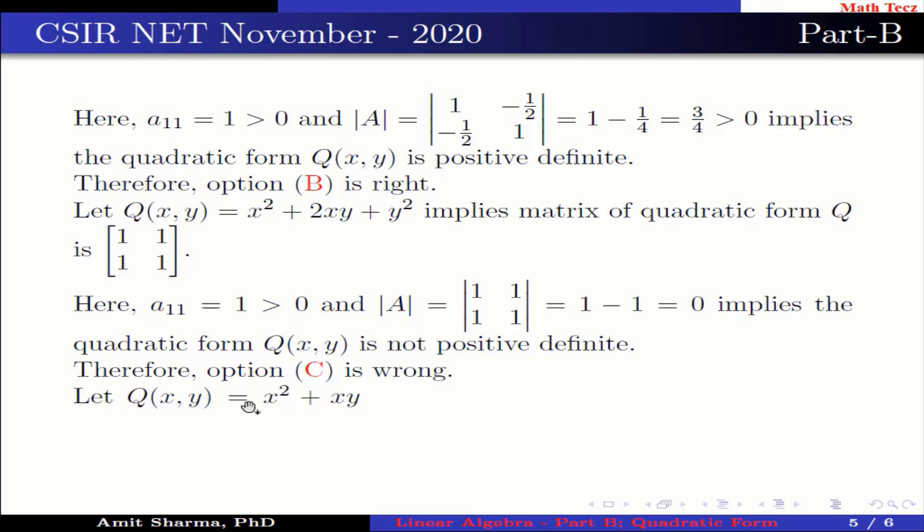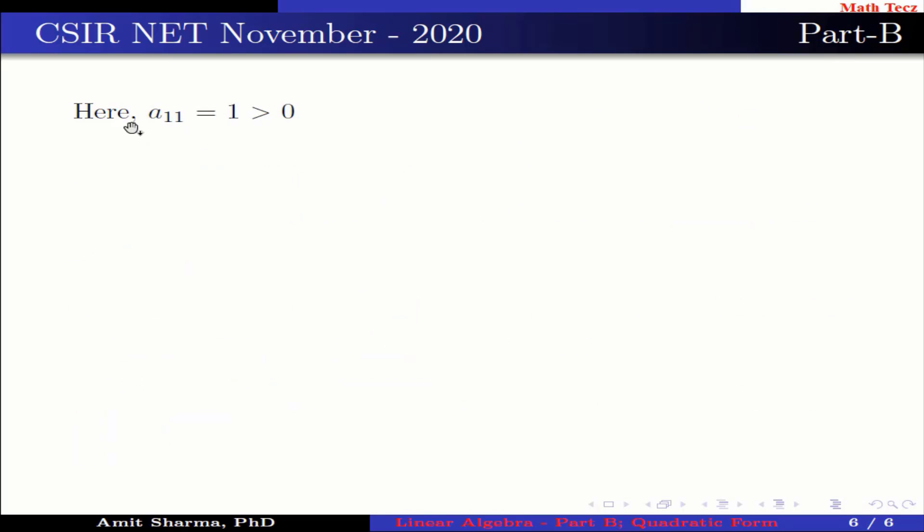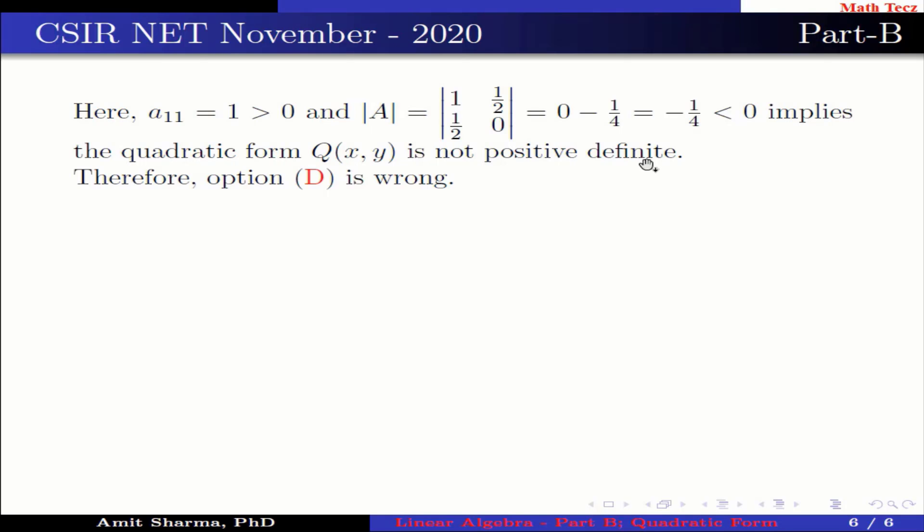Let Q(x,y) = x² + xy. This implies the matrix of quadratic form Q is a 2×2 matrix having elements 1, 1/2, 1/2, 0. Here, a₁₁ = 1, which is greater than 0, and the determinant of A is -1/4, which is less than 0, which implies the quadratic form Q(x,y) is not positive definite. Therefore, option D is wrong. Hence, option B is right.